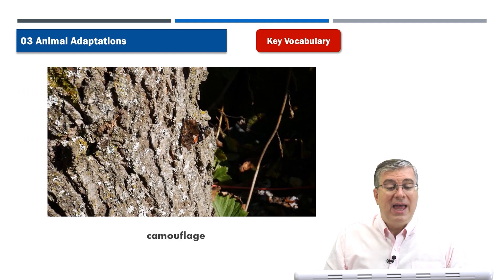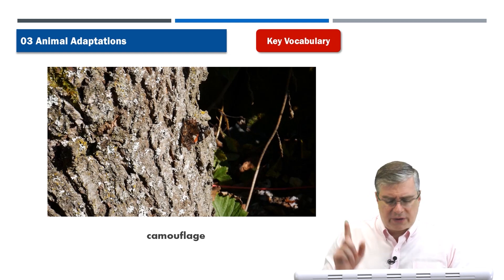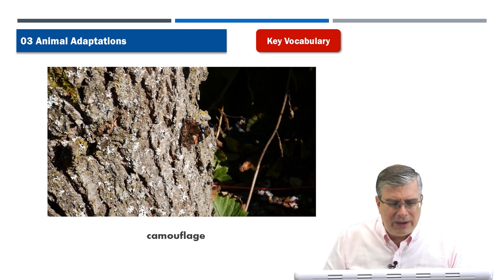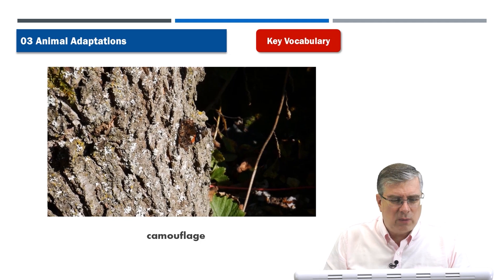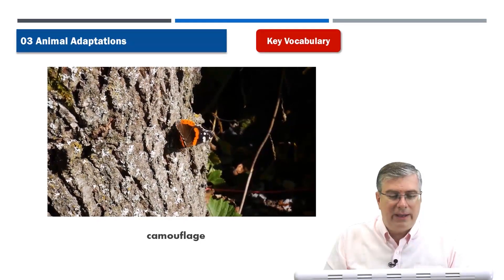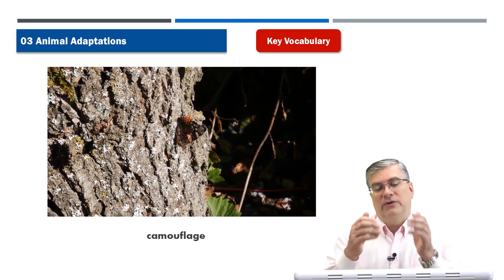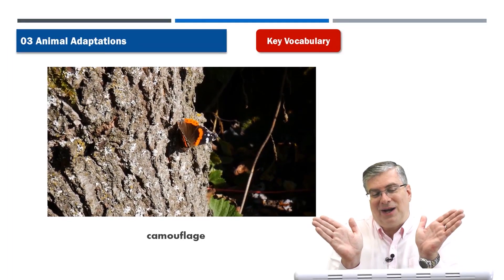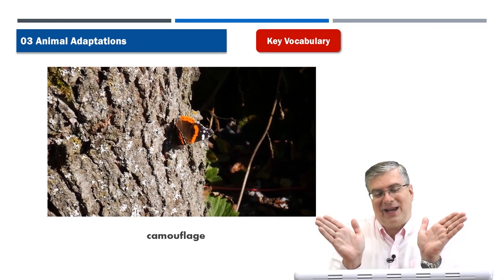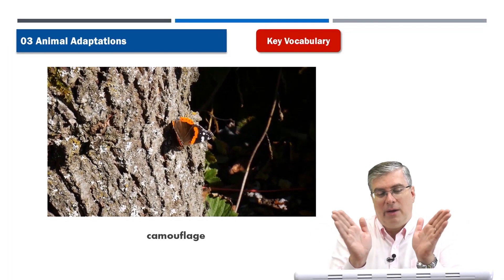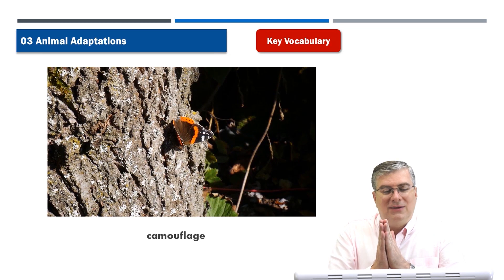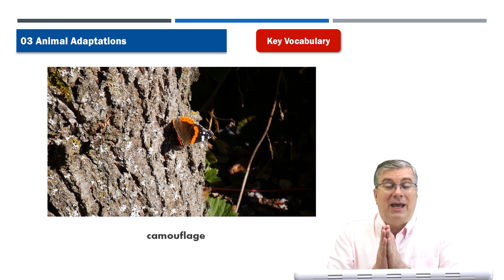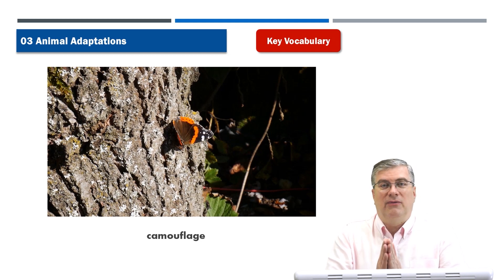We have a video showing camouflage. Look at this picture — can you see the creature? It's like playing Where's Waldo. Oh, there it is! It's a butterfly. When it opens its wings we can see it easily because then it's not camouflaged. But when it closes its wings, it's difficult to see because it looks like part of the tree bark. So that's a type of camouflage.